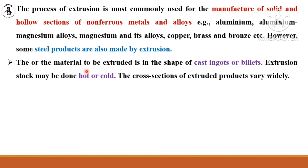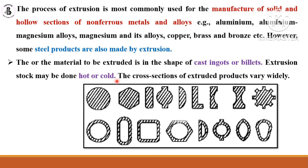The material to be extruded is in the shape of cast ingots or billets. Extrusion may be done hot or cold. The cross-section of an extruded product can have a wide variety of shapes with broad applications. For example, solid parts with circular or hexagonal cross-sections can be made with the extrusion process.